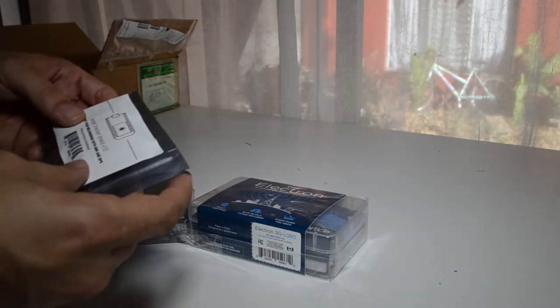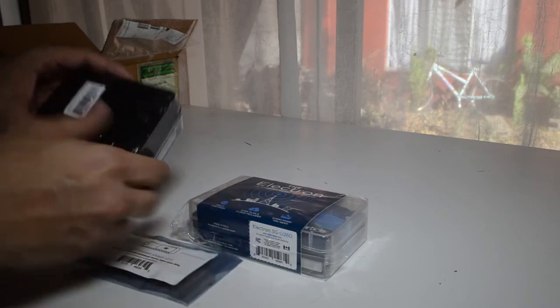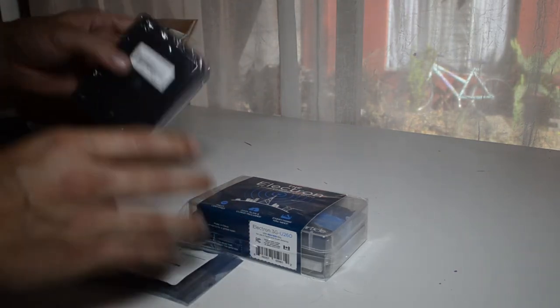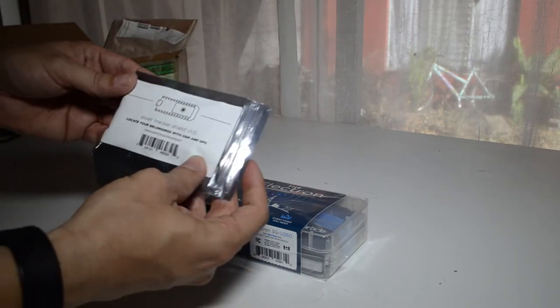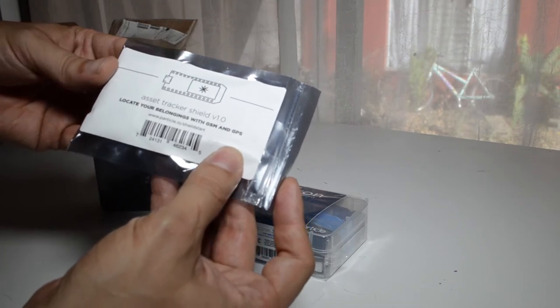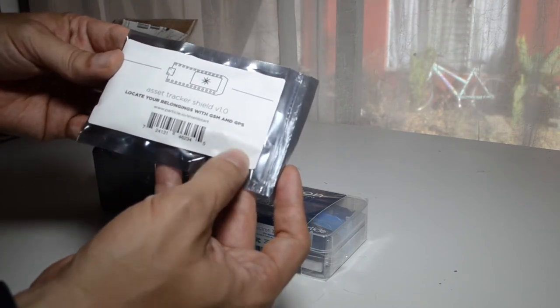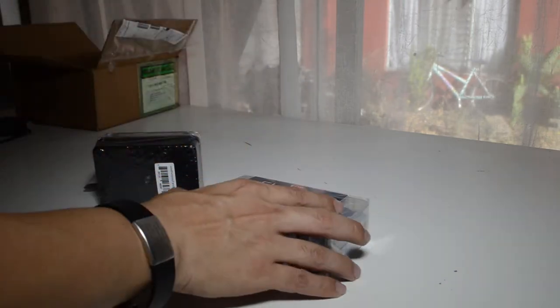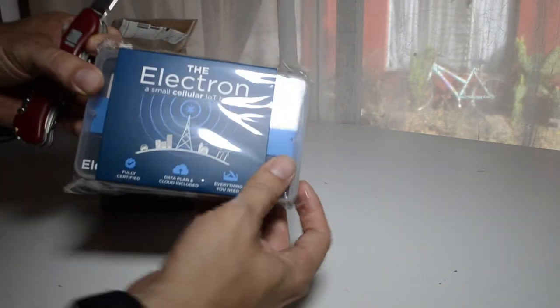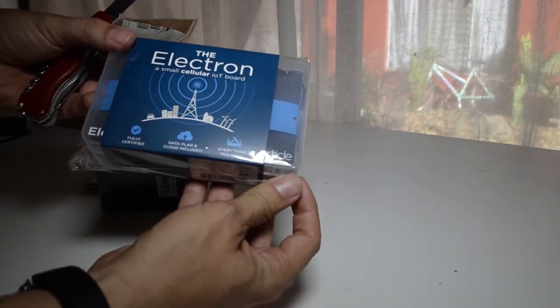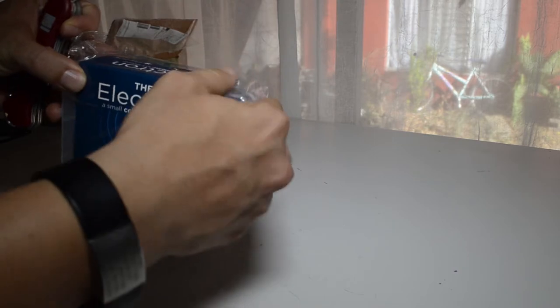Okay, hold on. All right, so basically the box containing the regular air bubbles to protect this. But what you got is the enclosure, the waterproof enclosure for the Electron, also the shield for the tracker stuff, the Asset Tracker shield.